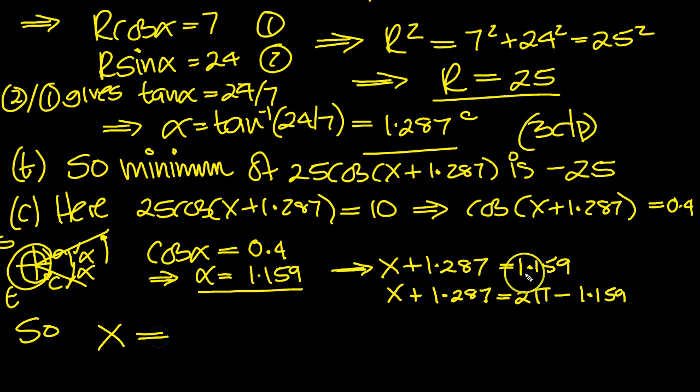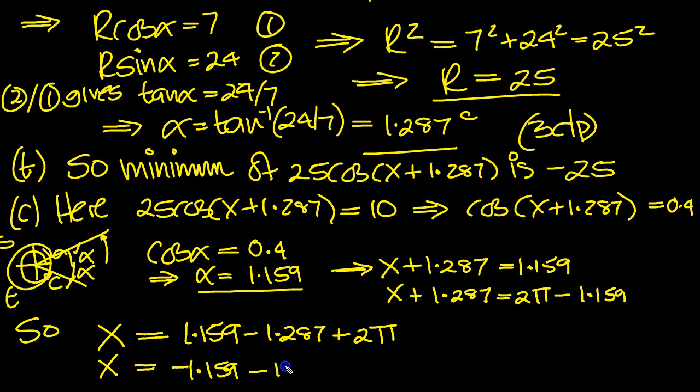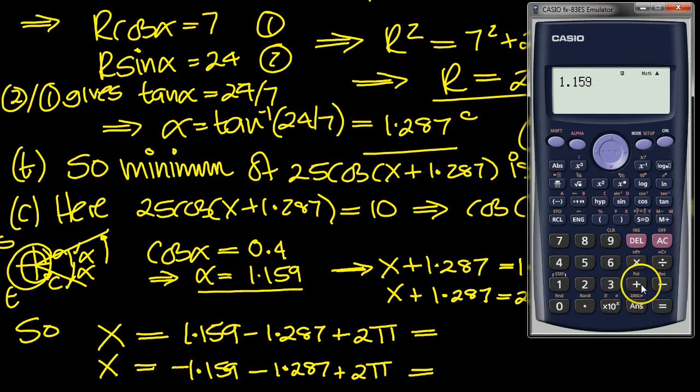So what do we infer for the x values? First of all, it's 1.159, and then we move this 1.287 over to become a minus. But we notice that this is now negative. Our region is from 0 to 2π. Final answer must be between 0 and 2π. So we need to add a full turn to get it back in range. Let's tap this in the calculator. We've got 1.159 minus 1.287 plus 2 times π. 6.155. But our answer has to be to 2dp, so it's 6.16 radians to two decimal places.